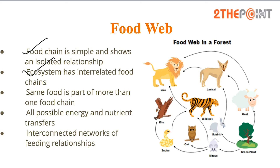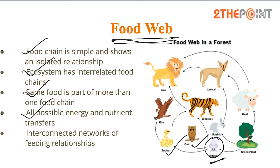The food web shows you more complex relationships. The same organism is part of more than one food chain — for example, the mouse is eaten by both owl and snake. All possible energy and nutrient transfers are shown in the food web, whereas a food chain will only show you one possibility.